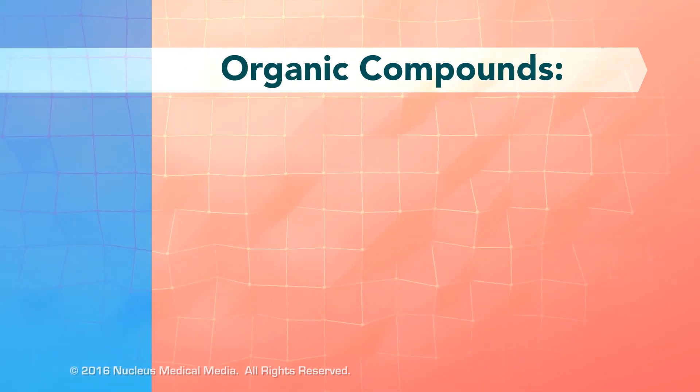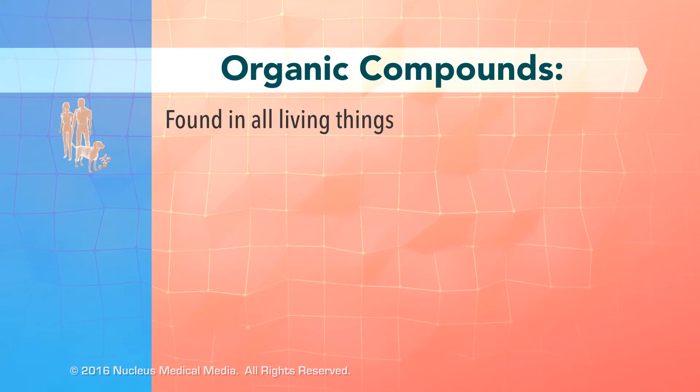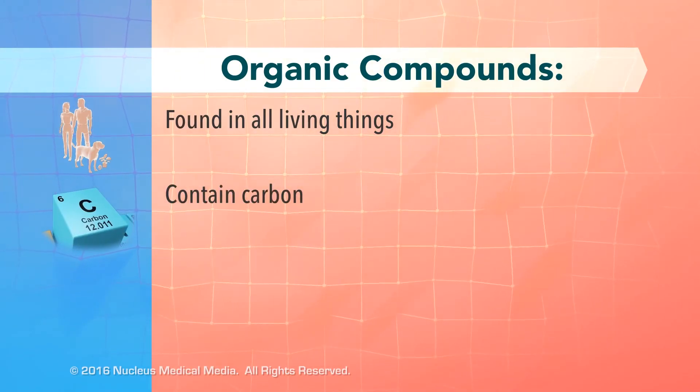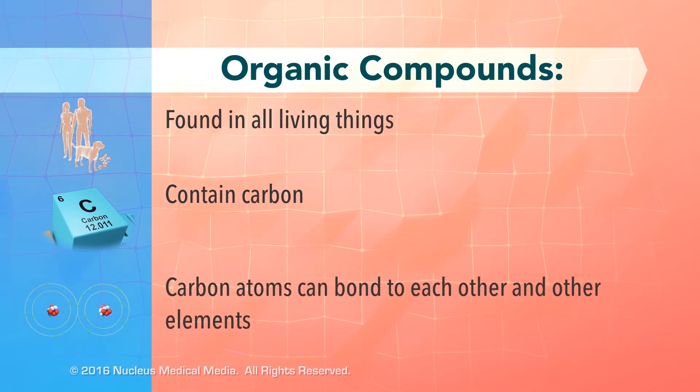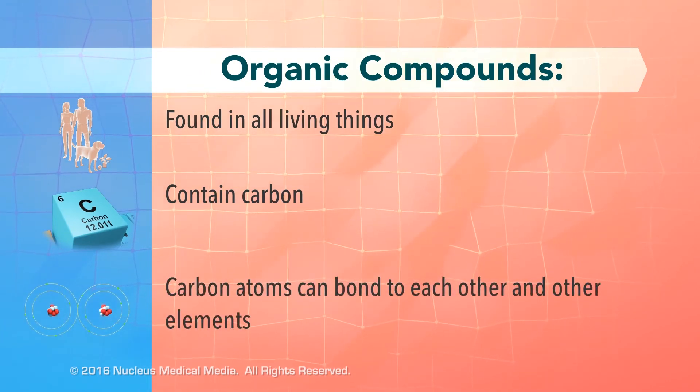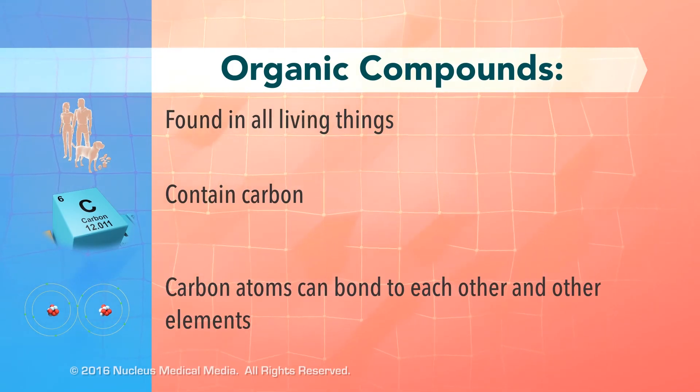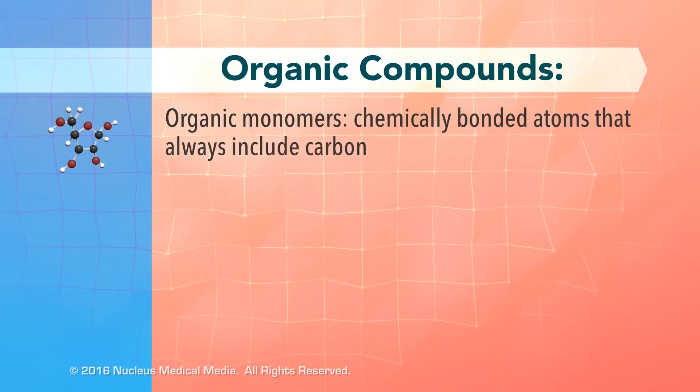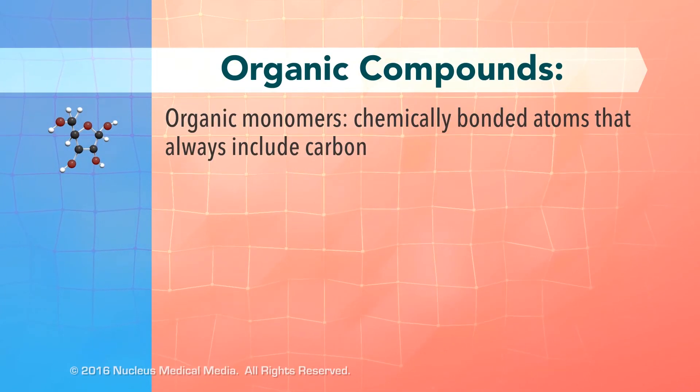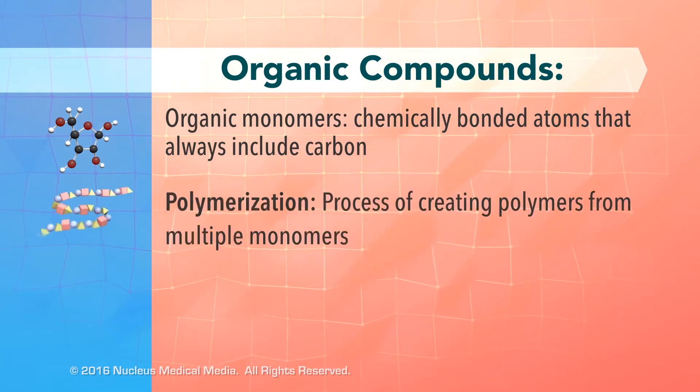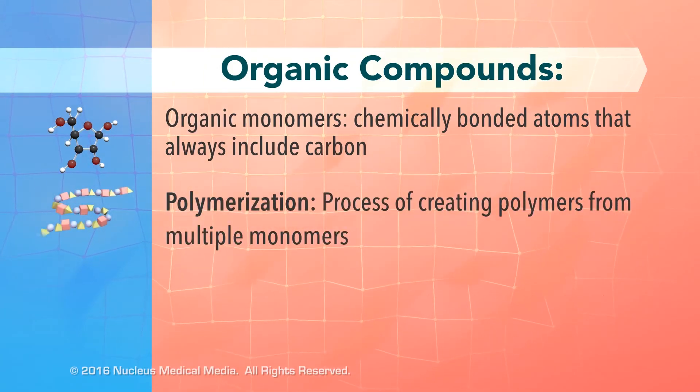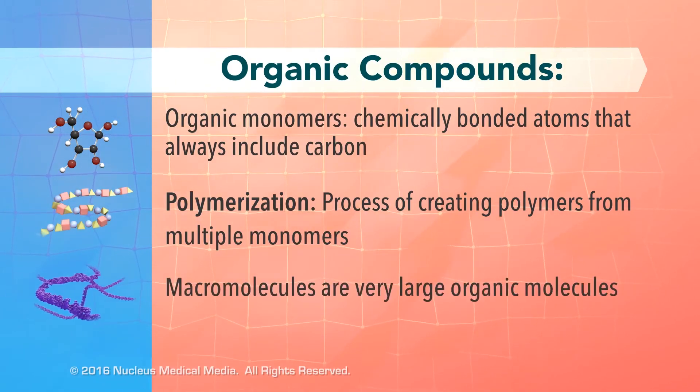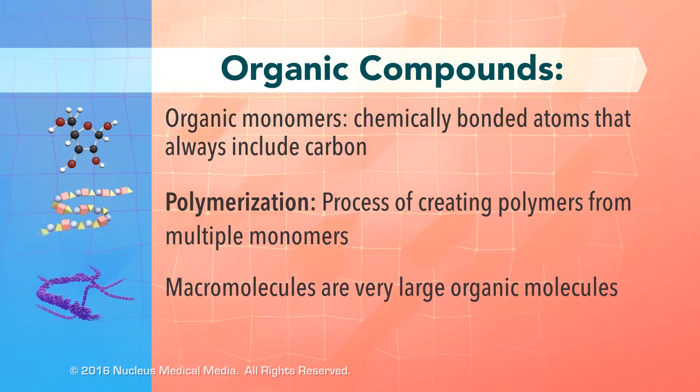To sum up, organic compounds are found in all living things. All organic compounds contain the element carbon. Carbon atoms have a unique ability to bond to other carbon atoms as well as other elements, such as hydrogen, oxygen, nitrogen, and phosphorus. Organic monomers are chemically bonded atoms that always include carbon. Polymerization is the process of creating long molecules called polymers from multiple bonded monomers.